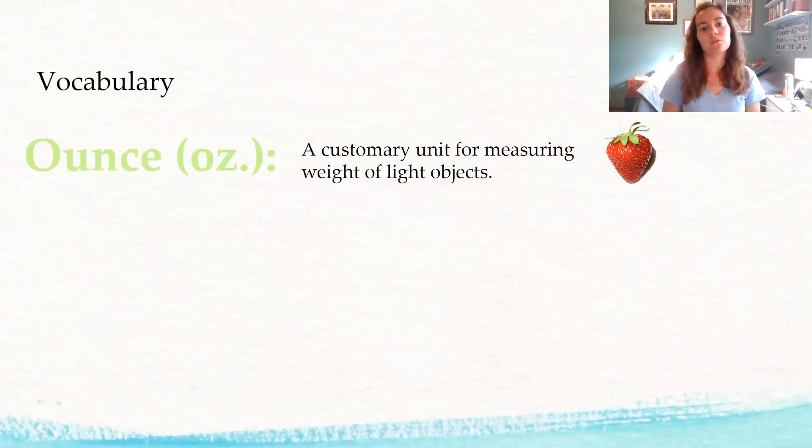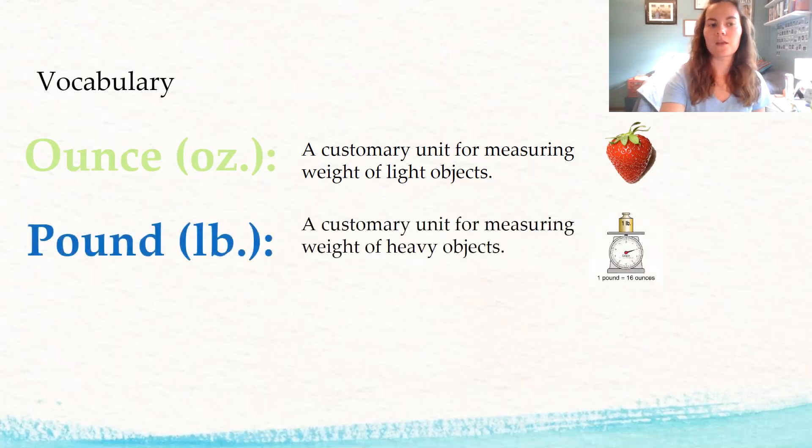And ounces are a customary unit for measuring weight of light objects. A pound is a customary unit of measuring weight of heavy objects.